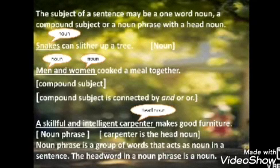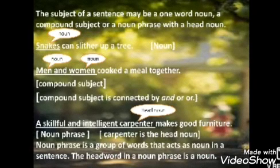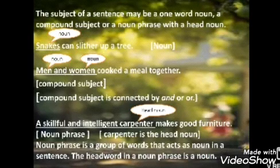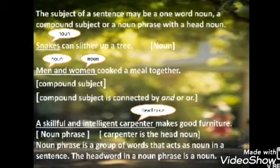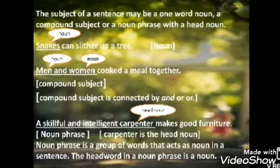Second example: 'Men and women cooked a meal together.' Who cooked a meal together? Men and women. Here there are two nouns combined with the conjunction 'and.' So the subject of this sentence is a compound subject. A compound subject is connected by the conjunction 'and' or 'or.'